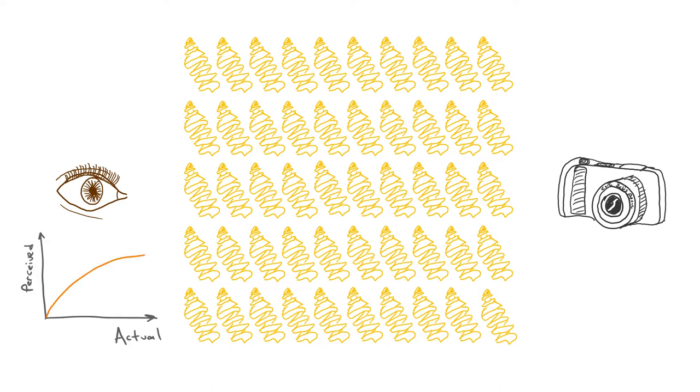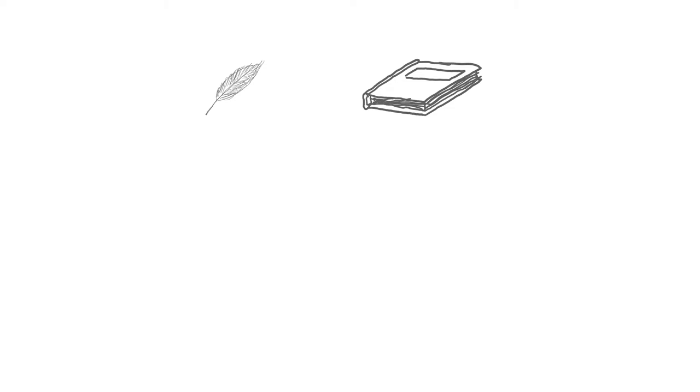The relation between the actual change in a physical stimulus and the perceived change is logarithmic. This phenomenon applies to many types of senses. For example, you can easily notice the weight difference between a feather and a book, but you wouldn't be able to tell the difference whether there's a feather or a book in your backpack if it already has a lot of stuff in it. This phenomenon is known as Weber's law in the field of psychophysics.